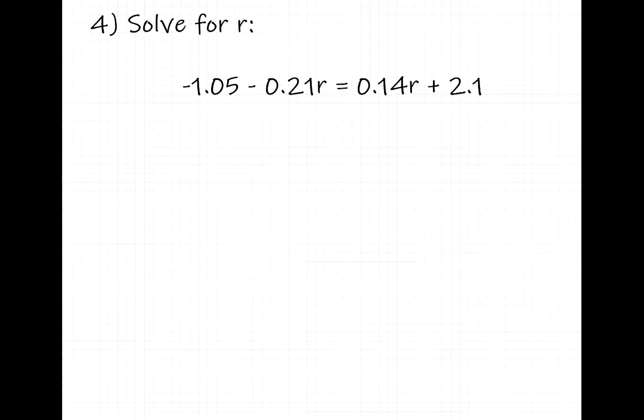Since we have two decimal places here, two decimal places here, two decimal places here, and only one here, we need to move that decimal point twice. To do so, we need to multiply both sides of the equation by 100.